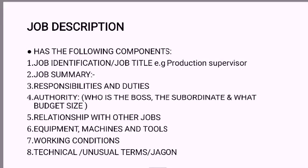The job description document must describe the job title, which must be short, definite, and suggestive of the nature of the job. The job summary is a short summary of the tasks to be performed by the employee. The duties section should include the percentage of time devoted to the performance of each task. The equipment, machinery, and tools to be used in the job should also be written in the job description document.